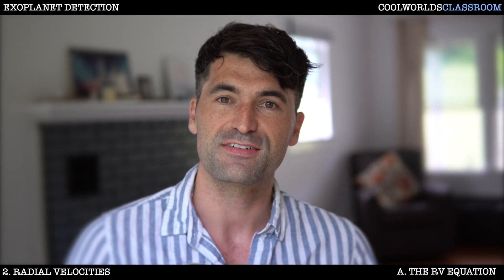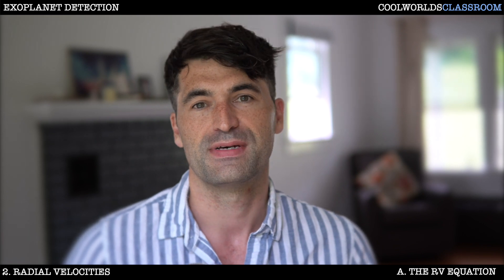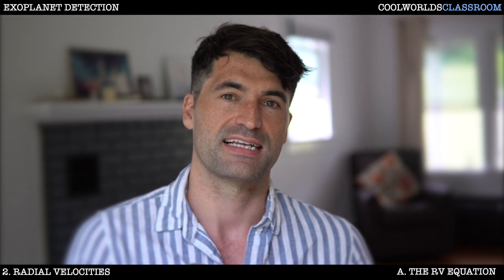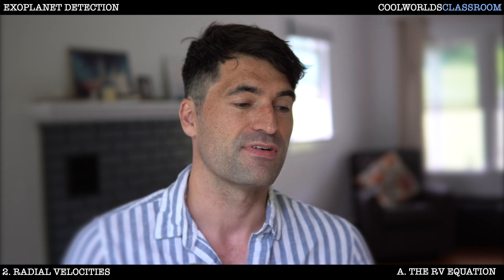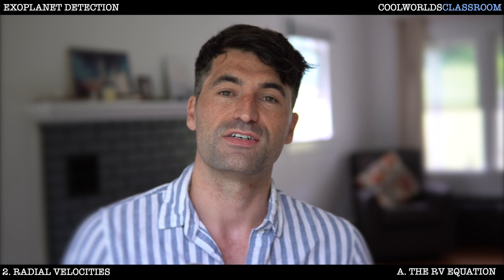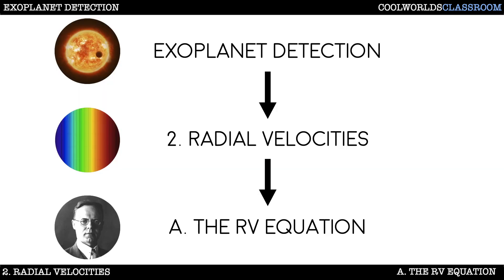Welcome to chapter two in the exoplanet detection series here in the Cool Worlds classroom. In chapter one we established some foundational results in celestial mechanics, and that meant a lot of mathematics, a lot of hard work, but now we get to reap the rewards of all of that effort. In today's video we will be using those early results to derive the equation governing the radial velocity method of detecting exoplanets.